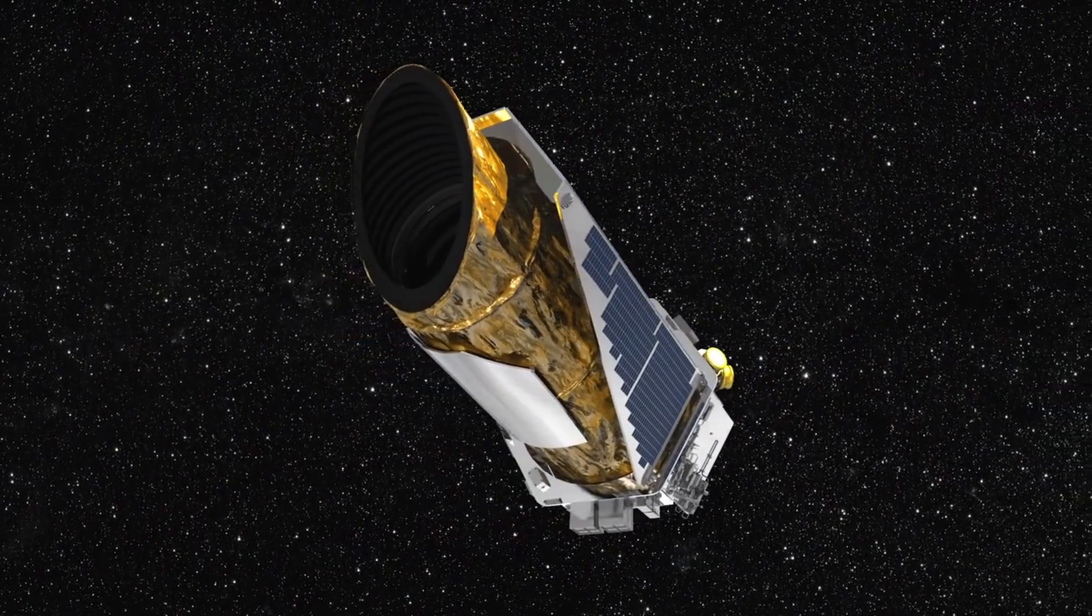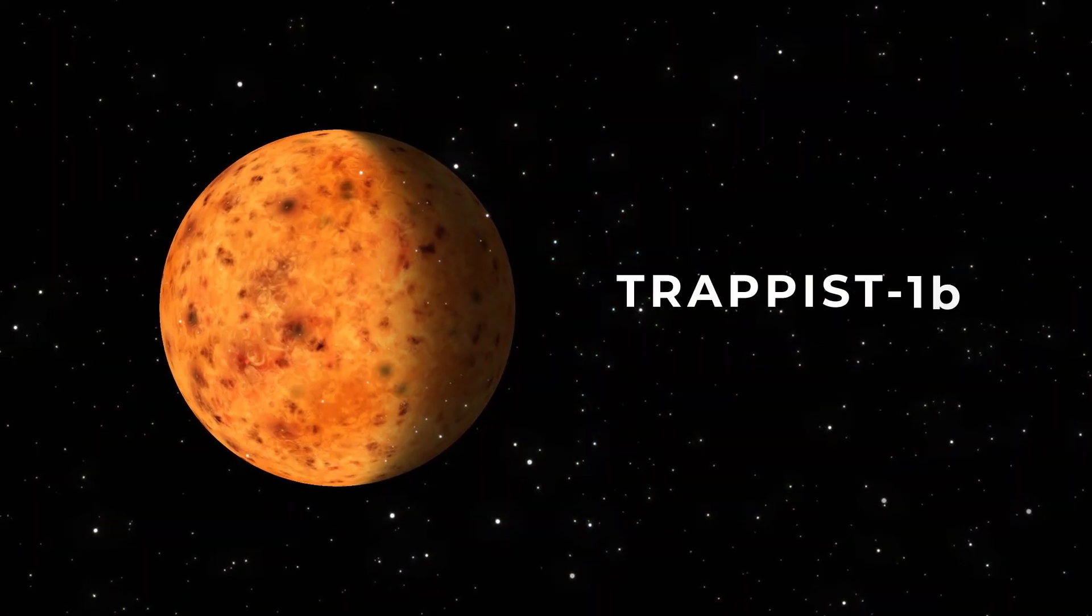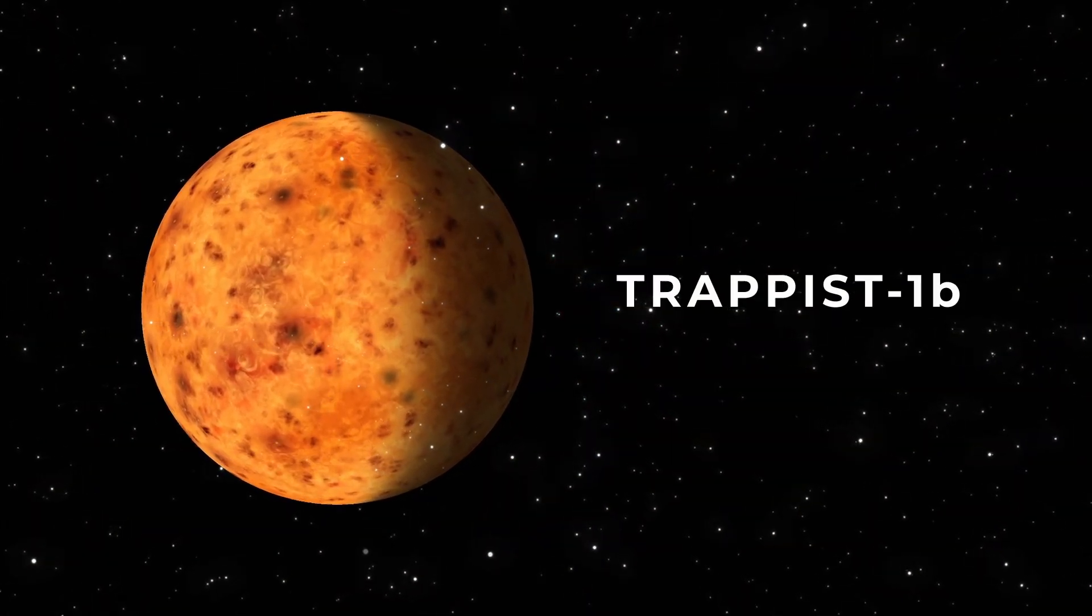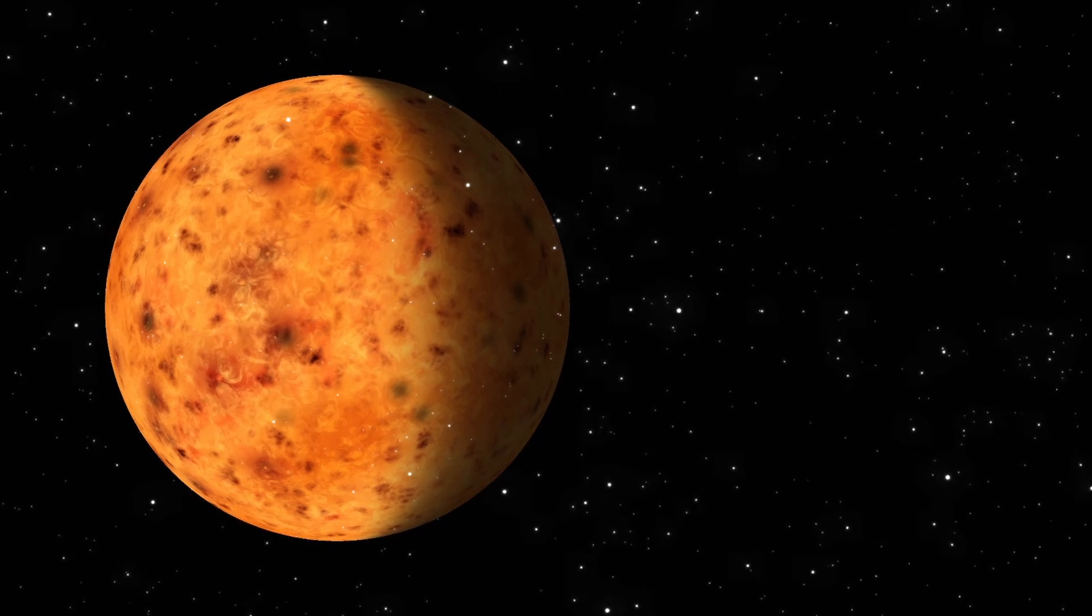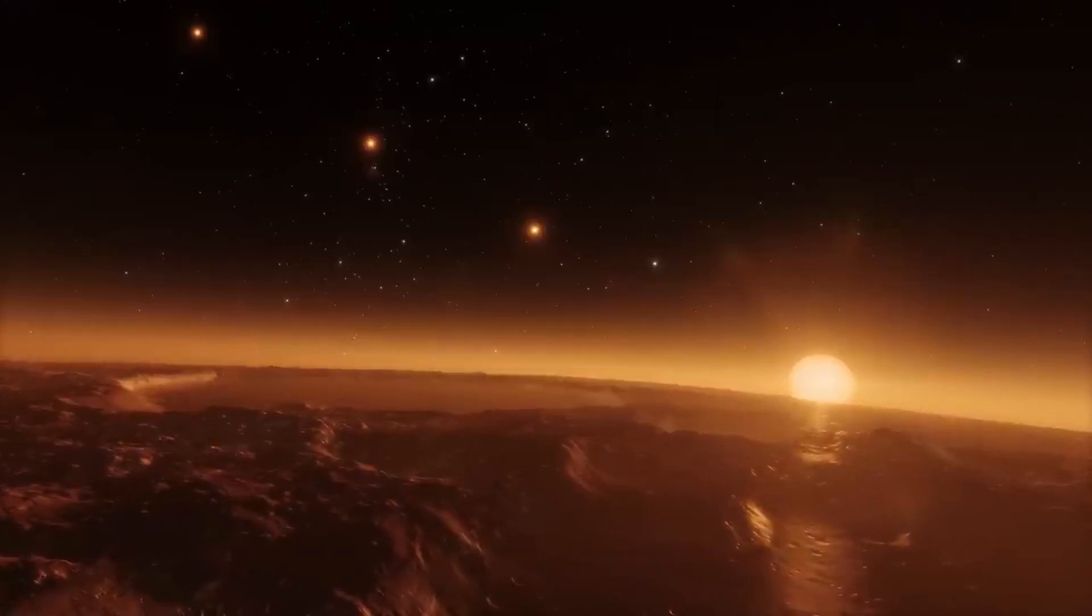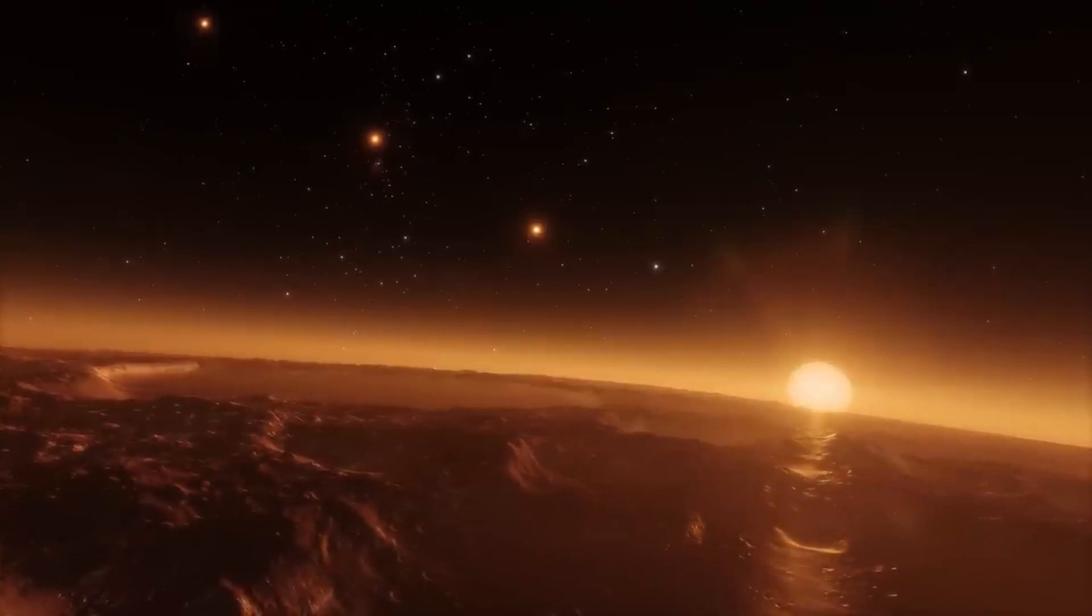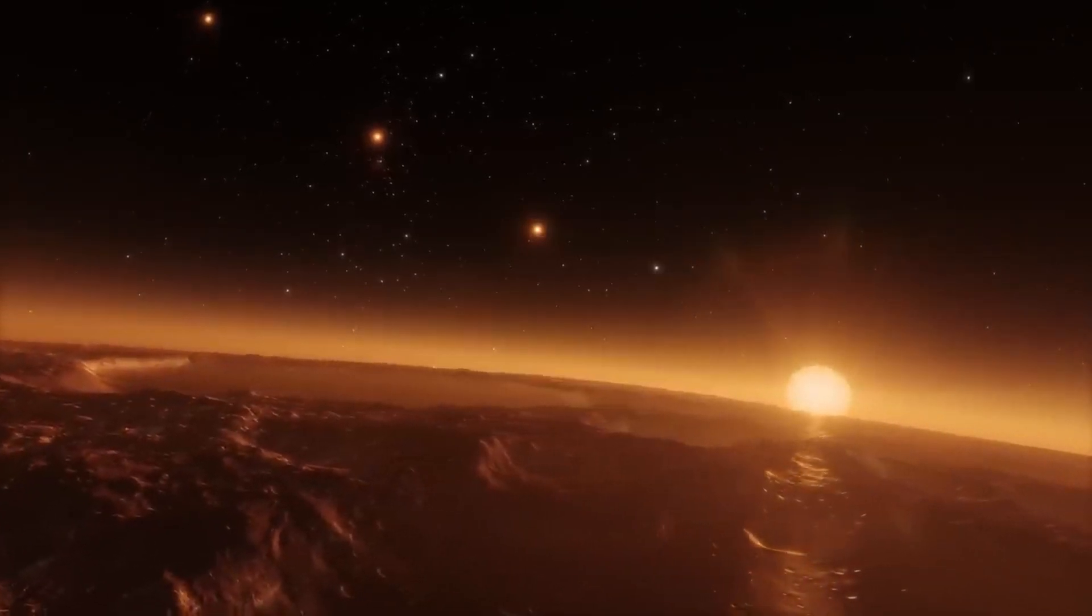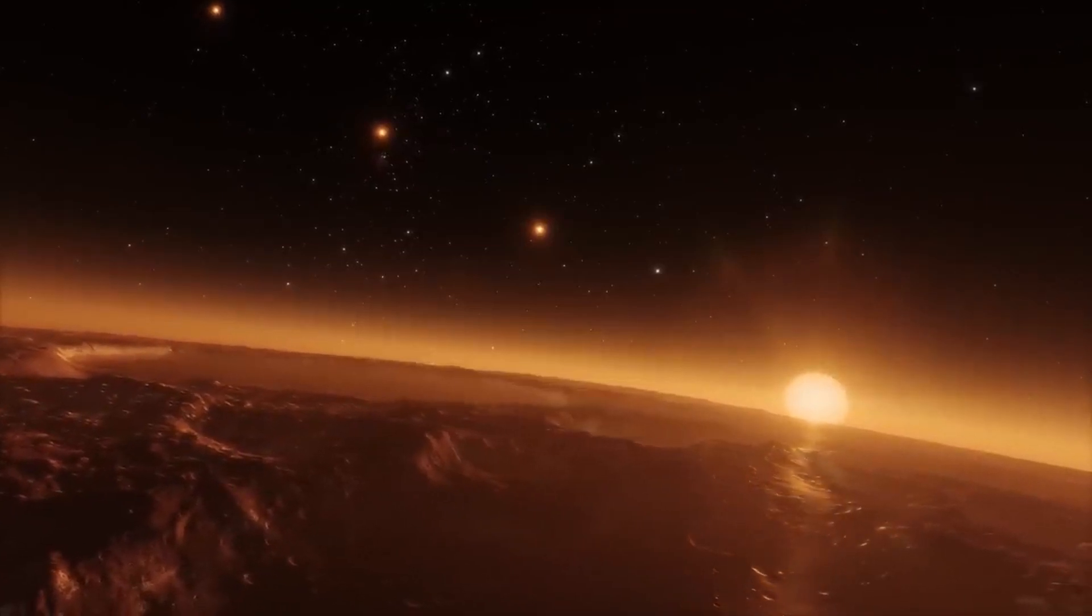While Kepler has unearthed numerous unique planets, another notable candidate is TRAPPIST-1b, discovered in 2016. Approximately 1.5 times larger than Earth, data suggests it may harbor conditions suitable for life. NASA astrophysicist Thomas Green revealed the planet's dense atmosphere shields its surface from excessive heat and radiation, despite its proximity to its star. However, JWST observations unveiled scorching daytime temperatures exceeding 200 degrees, making it uninhabitable for humans, but potentially hospitable for other species.